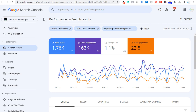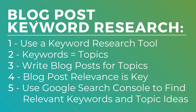First things first — the way that I do blog post keyword research is I generally use a keyword research tool to get started, to come up with a list of keywords which I eventually turn into topics. What you want to do is write blog posts for your topics — write really comprehensive and detailed blog posts completely covering that topic. Your blog post relevance is key.